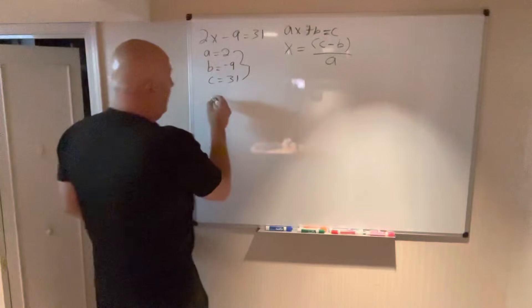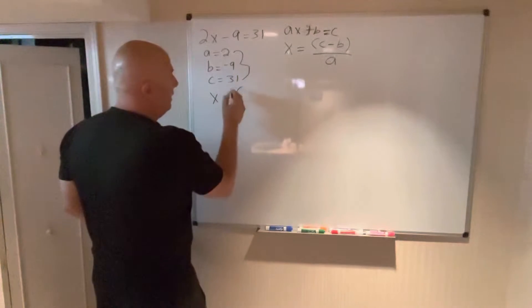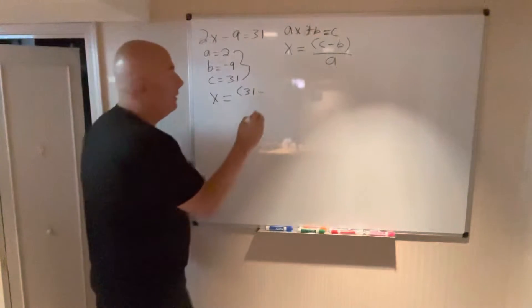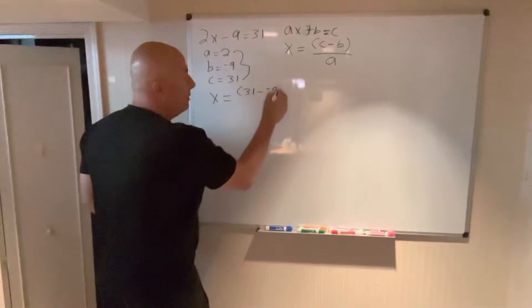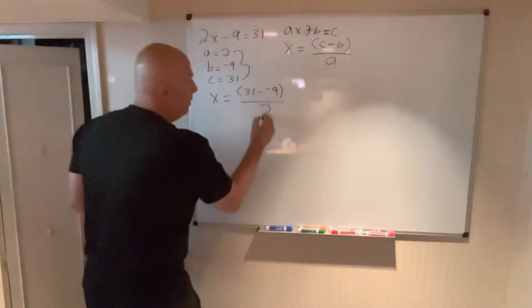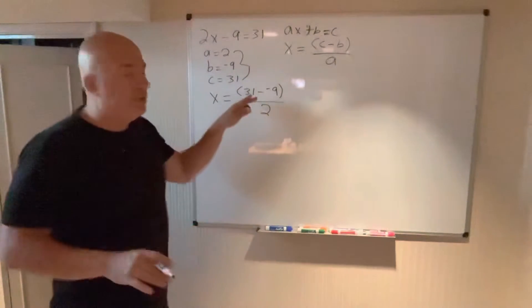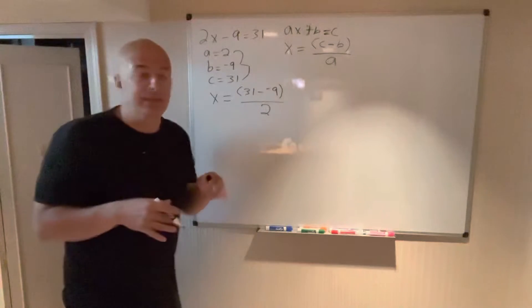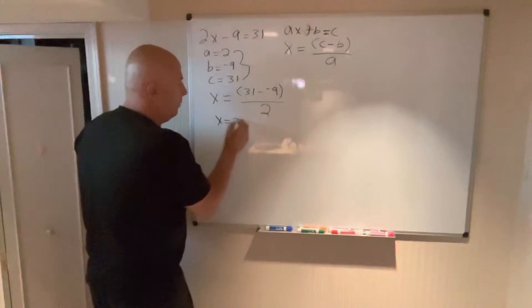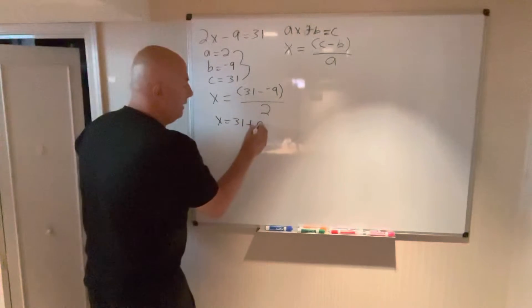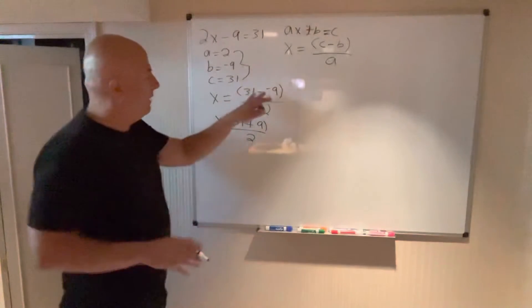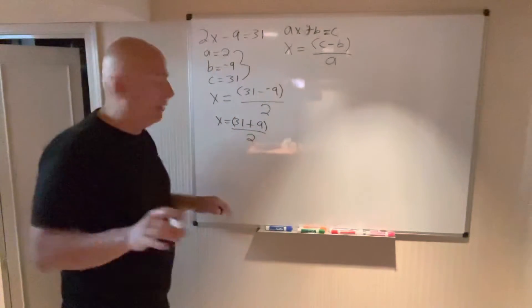So x equals the quantity c, which is 31, minus negative 9, which is b, all over a, which is 2. Double negatives turn into a positive. So really what this says is x equals 31 plus 9 all over 2.